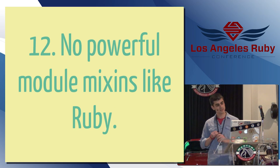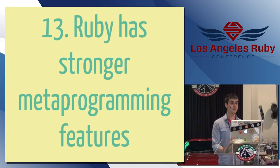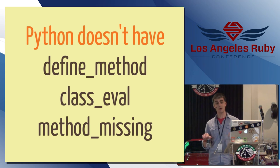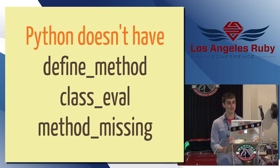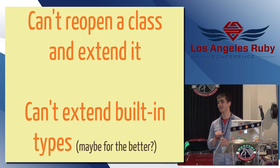There's no powerful module mixins like Ruby. You can get similar behavior, but generally you're only talking about multiple inheritance in Python, which I don't particularly like. And 13, Ruby has stronger metaprogramming features. Python definitely has some metaprogramming features, but it doesn't have things like define method, class eval, method missing, all these great things that basically allow a framework like Rails to work the way it does. You can't open a class and extend it. If you open a class, you're going to overwrite it. You can't extend built-in types either, but maybe that's for the better, because I'm sure we've all been bitten by that at some point.